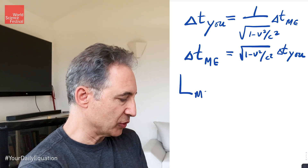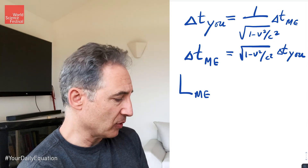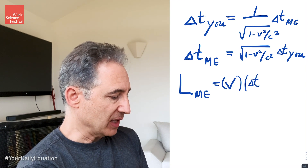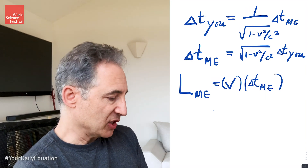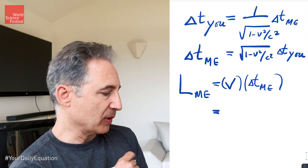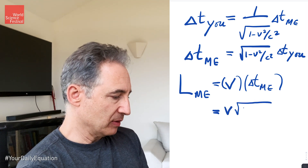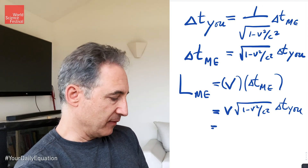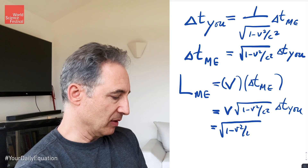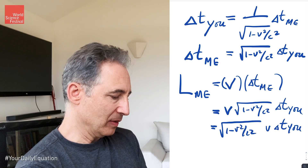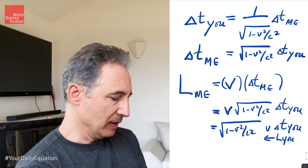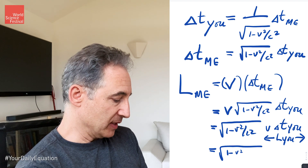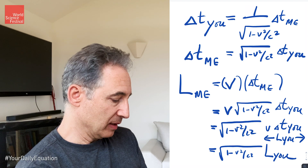Why is that relevant? If I consider the length of your train according to me — that's my measurement of the length of your train — well, as we described in that animation, I'm taking the velocity of the train times the amount of time that goes by on my stopwatch. Using the relationship between time according to you and time according to me, I can write this as v times the square root of 1 minus v squared over c squared times delta T_u. This combination is just the length according to you. And therefore, length according to me is the square root of 1 minus v squared over c squared times the length according to you.